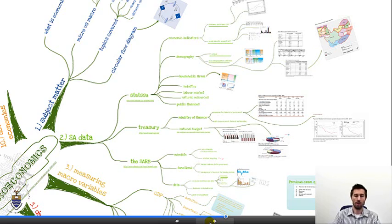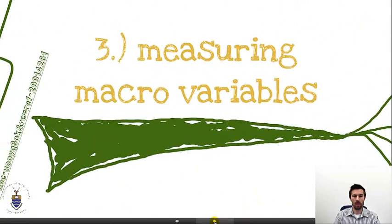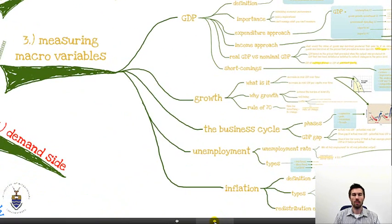That brings us to part three, which is about our different macroeconomic variables and how we measure them. The variables we will be looking at are GDP, growth, the business cycle, unemployment, and inflation — but we will begin with GDP.